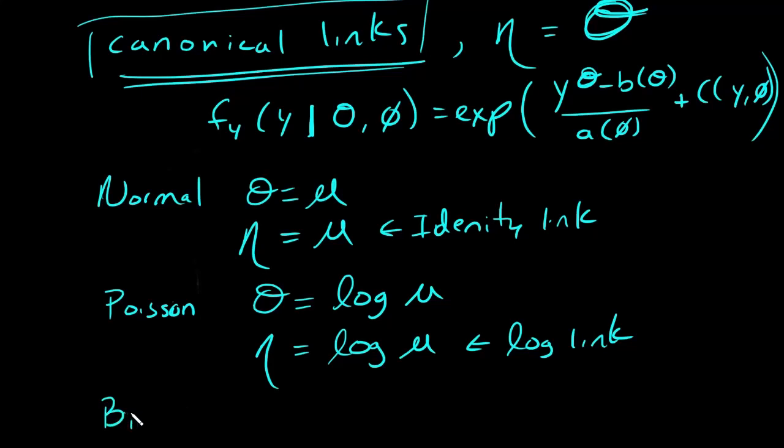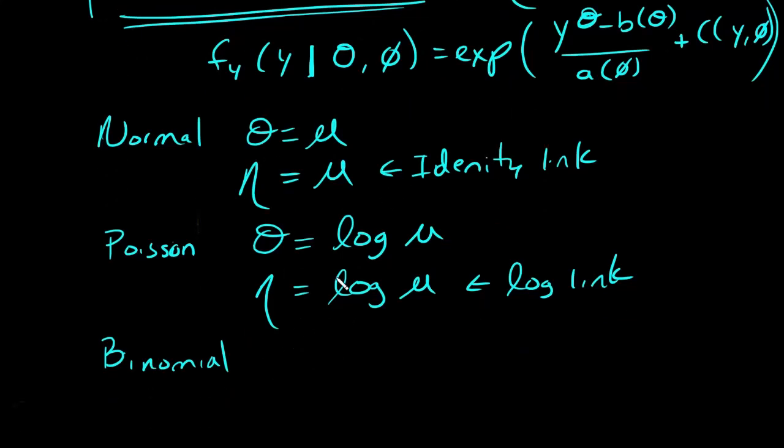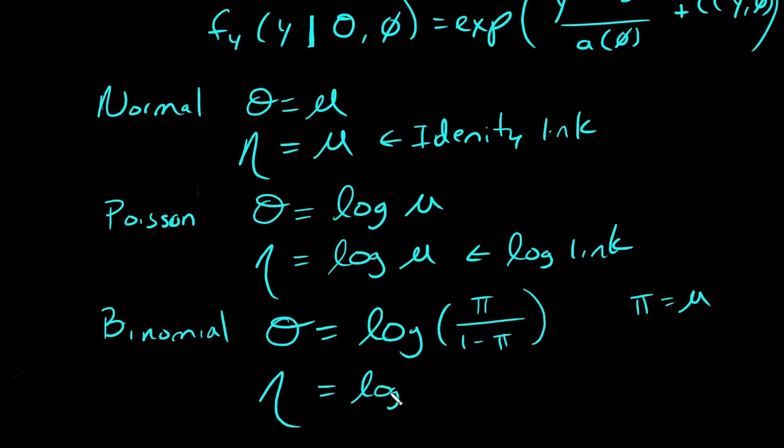Also for binomial, if you were to rearrange the binomial distribution, make it look like an exponential family, you will find that theta equals the log of, a lot of times in binomial we call it pi instead of mu, but pi is the same thing. So the probability of success, same thing as your mu. The canonical link will then just be log of pi over one minus pi. This is called the logit link.